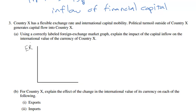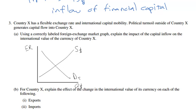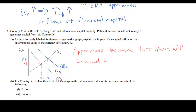We label the graph with the exchange rate of country X's currency on the vertical axis, the quantity on the horizontal axis — I'll call it the dollar — and draw the supply of the dollar and the demand for the dollar. Political turmoil abroad causes a capital inflow into country X, meaning foreigners wish to hold more of country X's assets. This causes the demand for country X's currency to increase and the equilibrium exchange rate to rise, with quantity supplied also rising — from the original equilibrium to ER1 and Q1. We explain that the currency will appreciate because foreigners demand more of country X's assets. The demand increases and the currency appreciates.